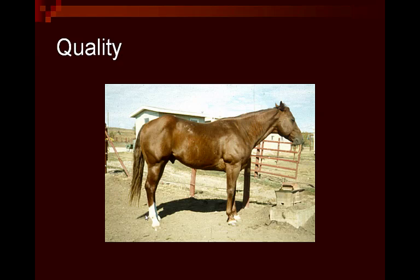Here's a horse that's really lacking in some quality. Just the overall general appearance — he's kind of rough, rugged, and a more coarse type of horse. We already looked at his head and his neck. Looking at his general bone structure, he's just going to be a bit more coarse, lacking some of the quality and refinement that we like to see in many of our horses today.